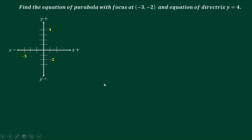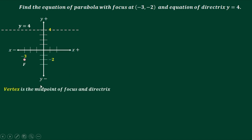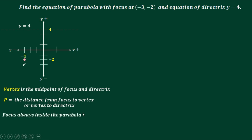First, we need to graph this parabola using the given information. We have the focus at (-3, -2). In a parabola, the vertex is the midpoint of the focus and the directrix. p is the distance from the focus to the vertex or from the vertex to the directrix, and the focus is always inside the parabola.